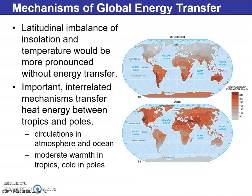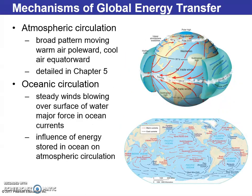Looking at mechanisms of global energy transfer, we have a latitude imbalance. With the tilt of the earth's axis and the earth revolving around the Sun, some latitudes are further away and sometimes closer. That, in conjunction with the Coriolis effect — where winds and currents go one direction in the northern hemisphere and the other in the southern hemisphere — drives currents and fronts, which we know as weather short-term and climate long-term. The mechanisms to transfer energy are atmospheric and oceanic.